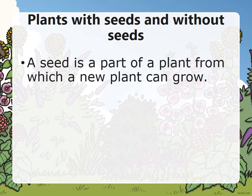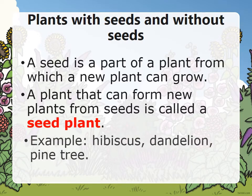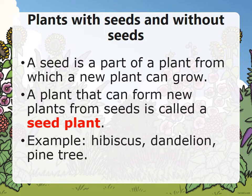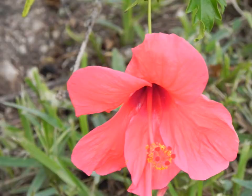A seed is a part of a plant from which a new plant can grow. A plant that can form new plants from seed is called a seed plant. Examples include hibiscus, dandelions, and pine trees. Here we have the dandelions and the pine tree, and here is the hibiscus.